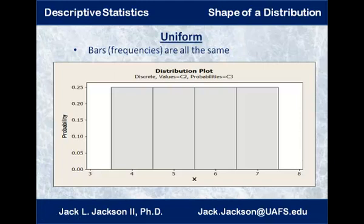Uniform means the frequency bars for a histogram would be all the same height. So this is a uniform distribution where 4, 5, 6, and 7 are all equally the same height. Notice some of these graphs will have probability listed on the left — that is actually relative frequency. This could be a relative frequency histogram, or if you multiplied these probabilities by the total sample size, it would be a frequency histogram. Uniform means all the same, evenly spread out.